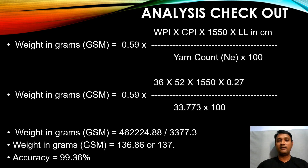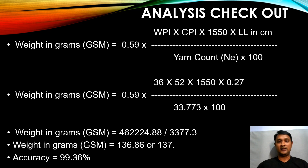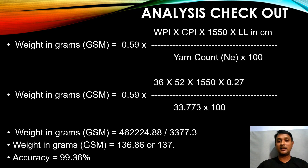Substituting the values — WPI = 36, CPI = 52, constant = 1550, loop length per loop = 0.273 cm (27.3 cm ÷ 100), yarn count = 33.773 Ne — and dividing by 100 to convert cm to meters, we compute: (36 × 52 × 1550 × 0.273) ÷ 100 = 46224.88, divided by 33.773 = approximately 136.86 g/m².